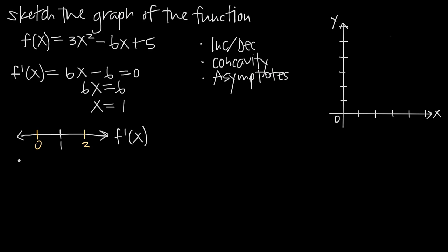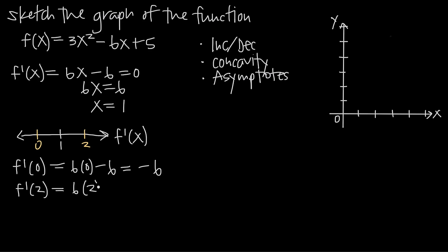Starting with 0: f'(0) = 6(0) - 6 = 0 - 6 = -6. Then plugging in the other test value, 2: f'(2) = 6(2) - 6 = 12 - 6 = +6. The exact value is not important — what matters is whether these values are positive or negative. We got -6 (negative, less than 0) for x = 0, and +6 (positive, greater than 0) for x = 2.